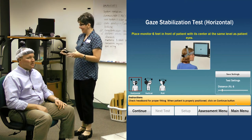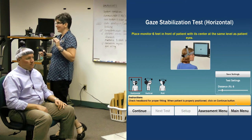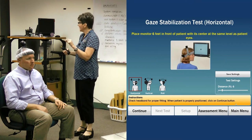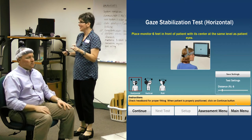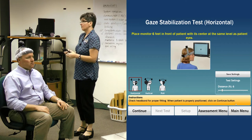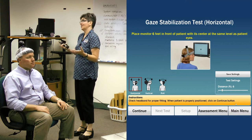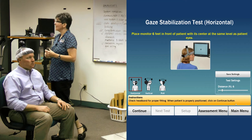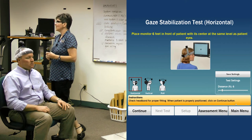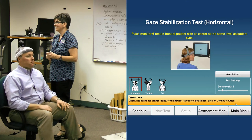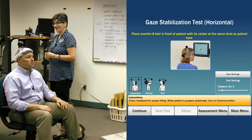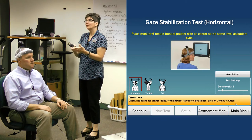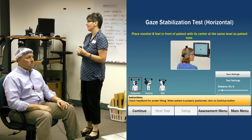In the gaze stabilization test, the optotype stays the same size throughout the test, but what changes is his head speed. For gaze stabilization, we can actually capture his maximum head speed while maintaining visual clarity. For the vestibular therapist in the room, this translates to the speed of the vestibulo-ocular reflex, or the speed at which retinal slip occurs. Now we have the ability to capture that speed very precisely and give our patients a home program geared exactly toward their speed of retinal slip.